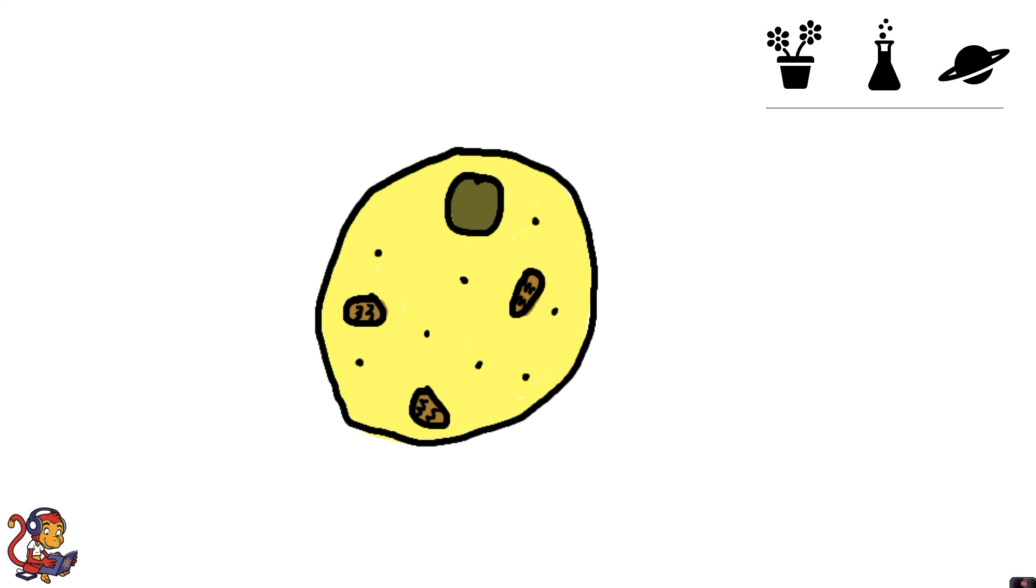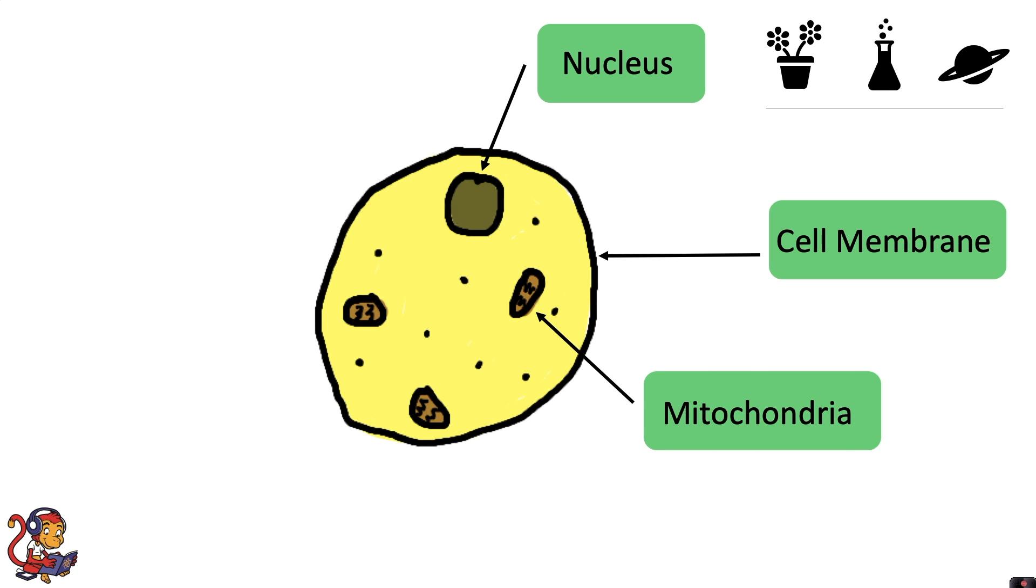Let's first look at the typical model of an animal cell. It has a nucleus, a cell membrane, mitochondria, cytoplasm and ribosomes.